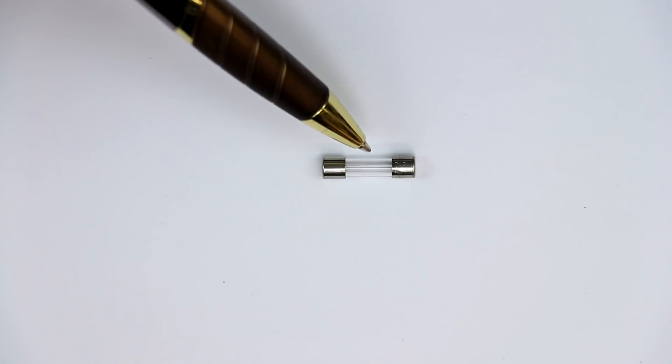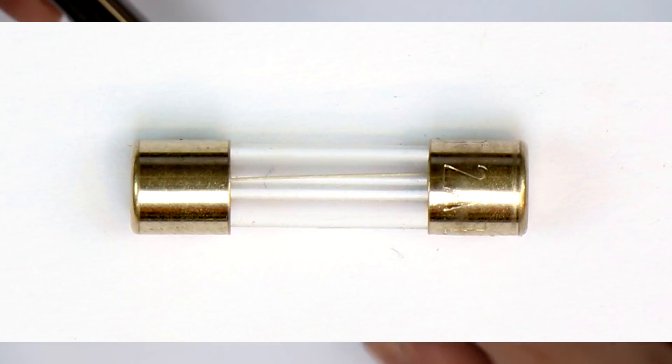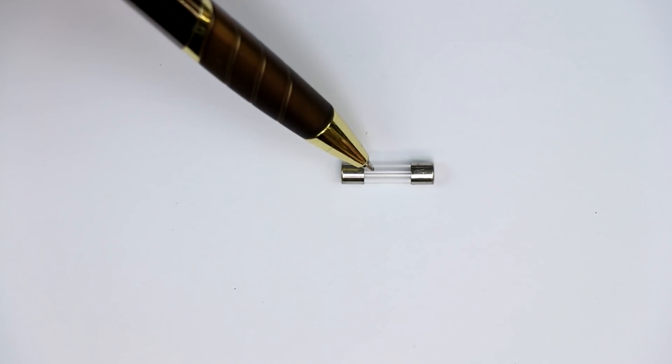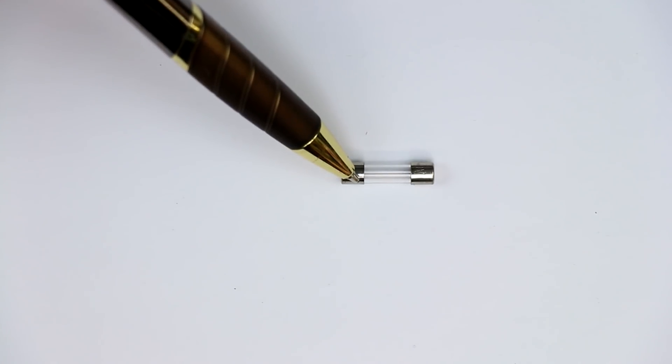These standard fuses, if you take a look inside, basically consist of just a wire—nothing more. Sometimes you find them sand-filled, but usually they are just a clear glass tube with two metal end caps, and the current goes through this wire.